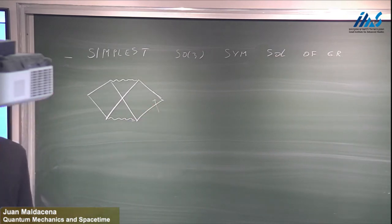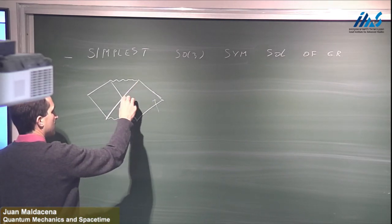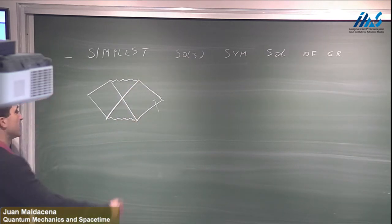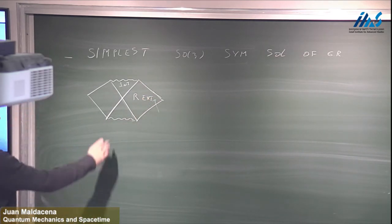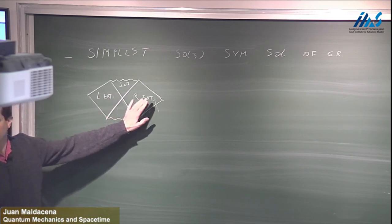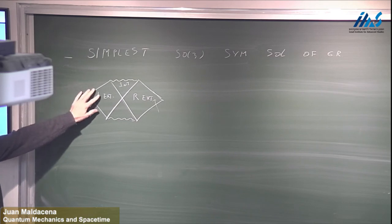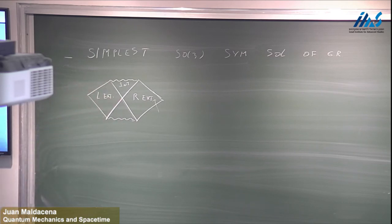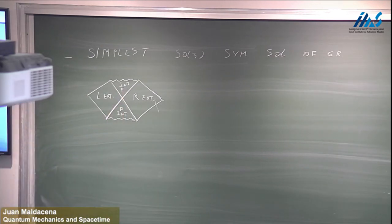The exterior region is asymptotically R4 — three spatial dimensions and time, flat space. It has a future horizon and a past horizon, and some interior. This is what I'll call the right exterior. It also has a left exterior, a region with exactly the same form as the right, so a second asymptotically R4 solution with its corresponding horizon. There is also a past interior and a future interior.